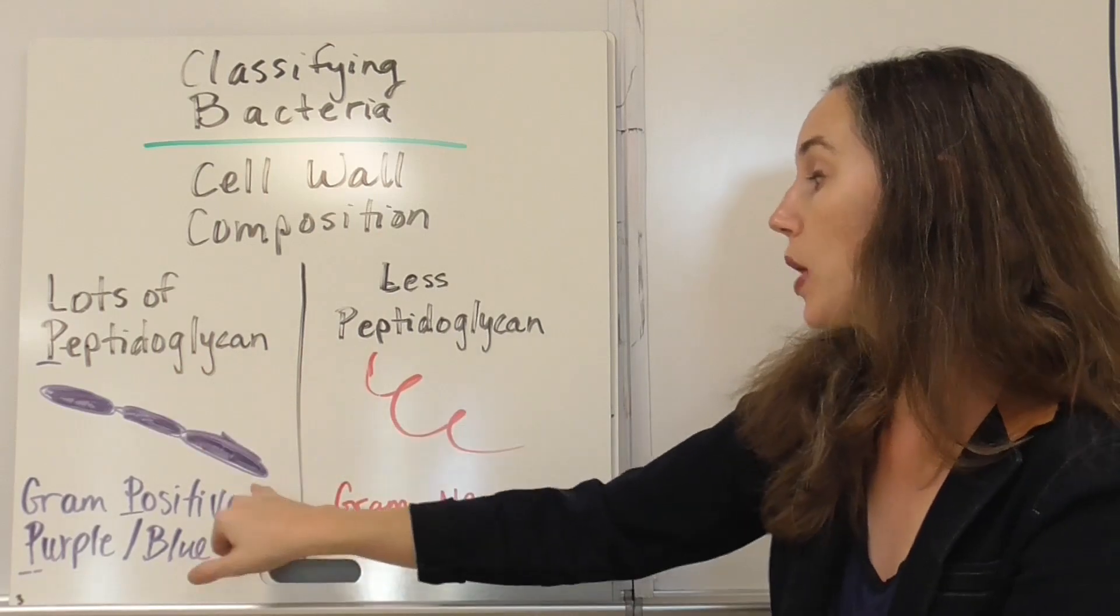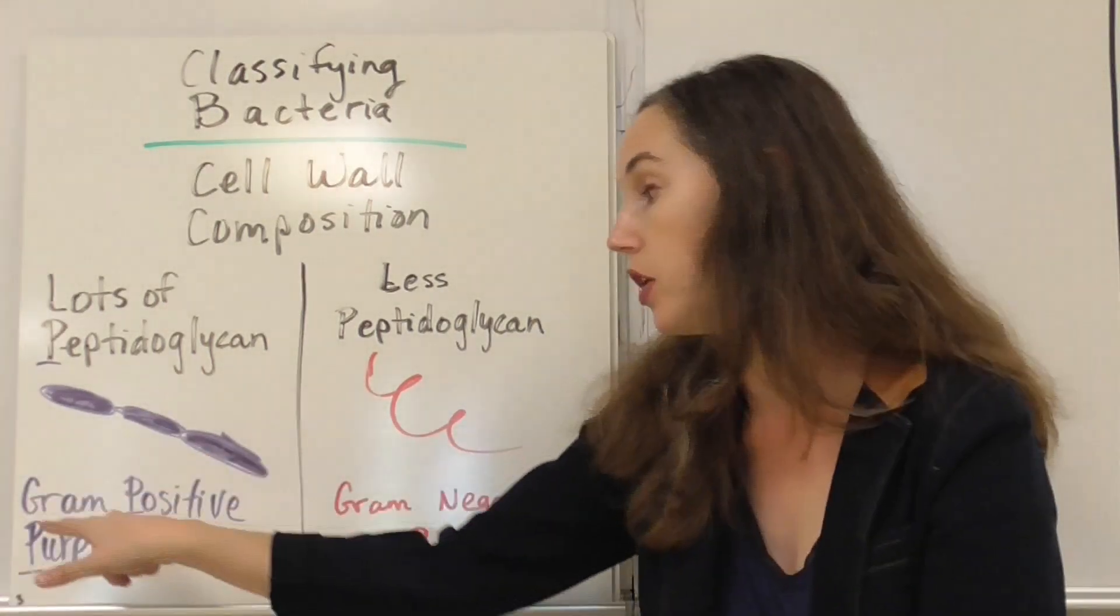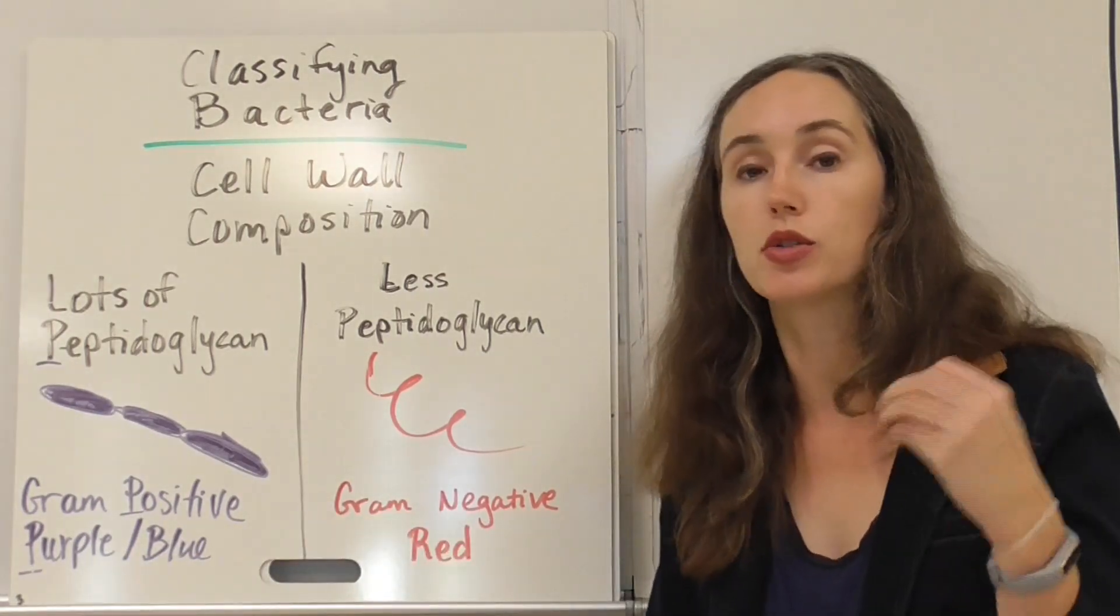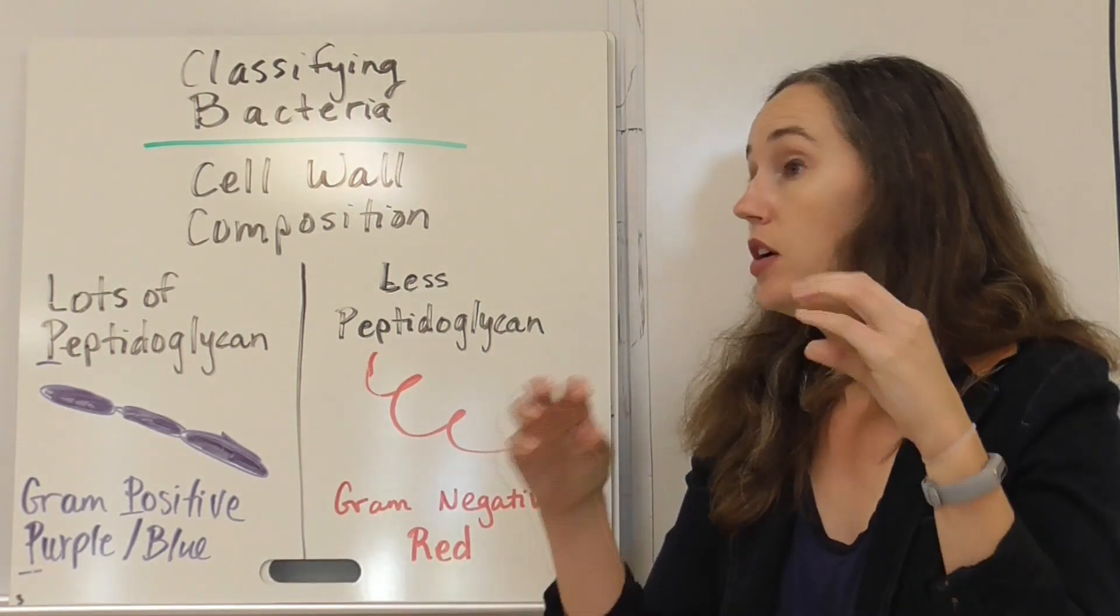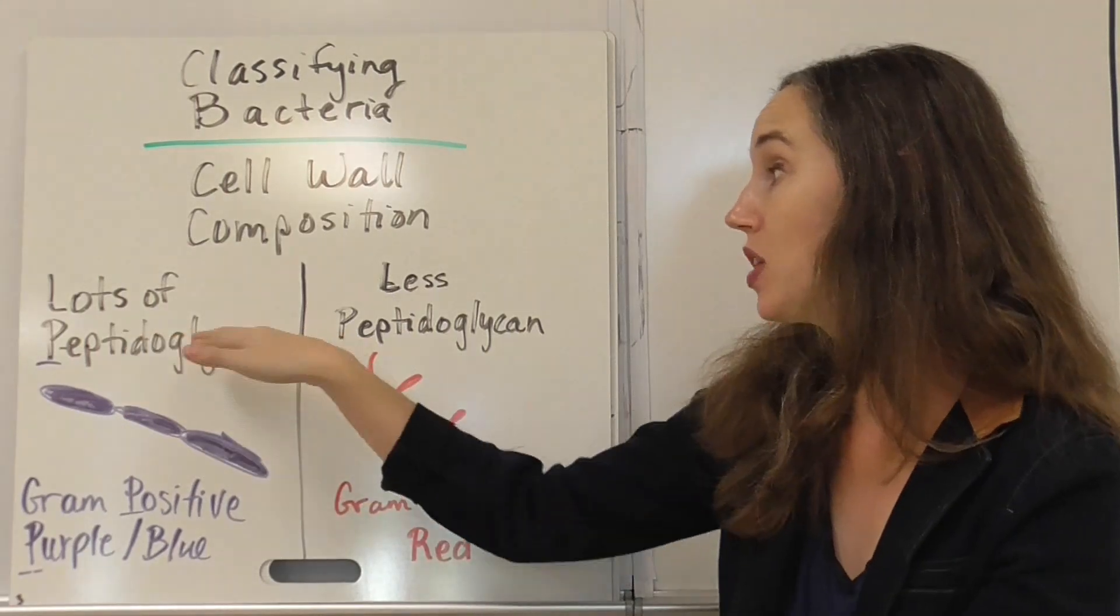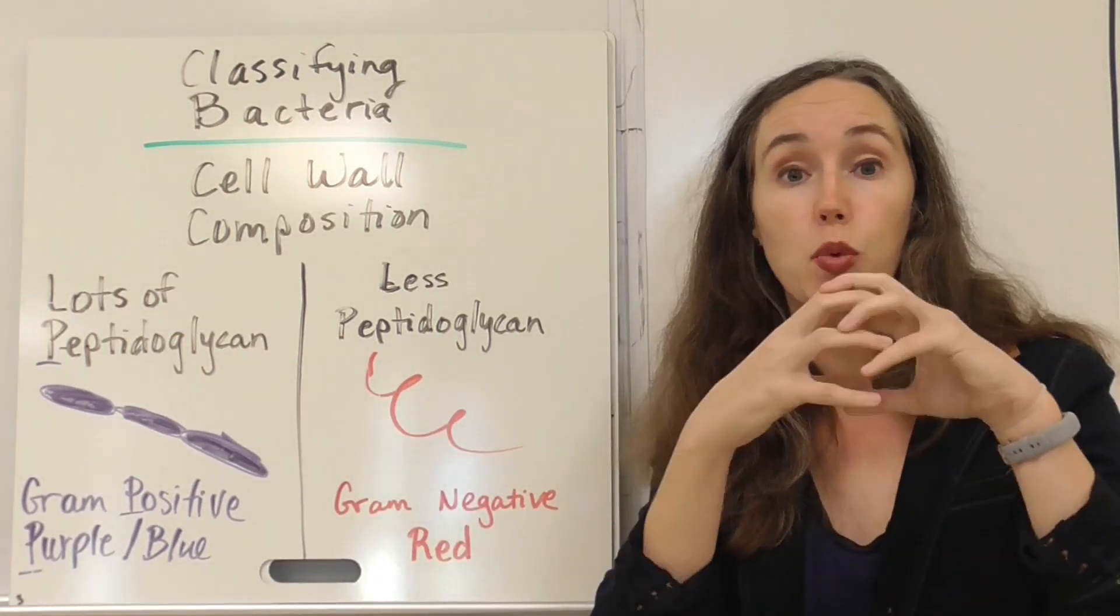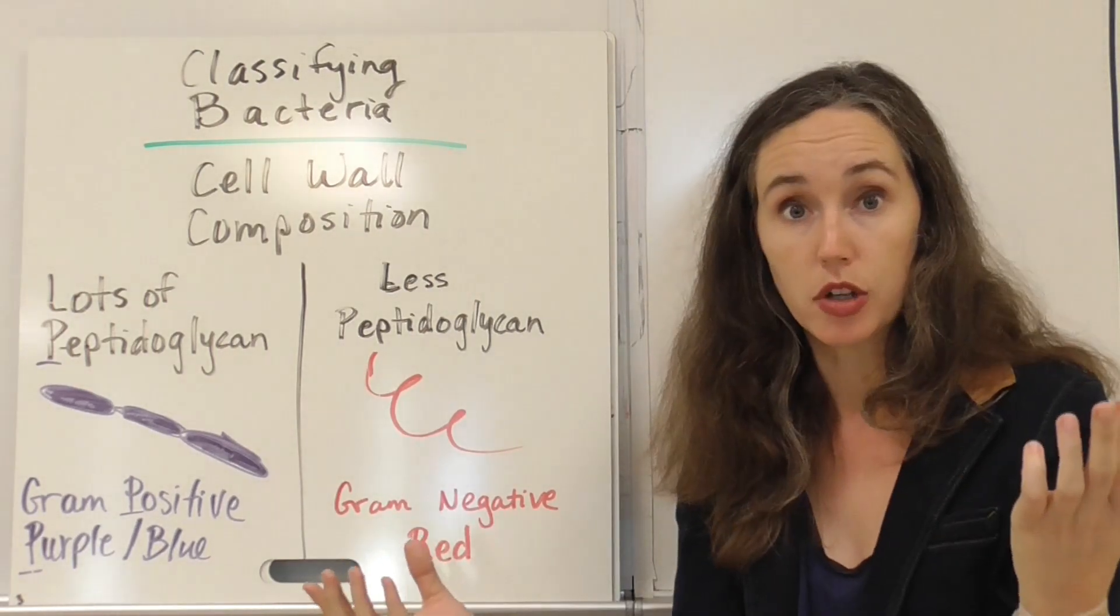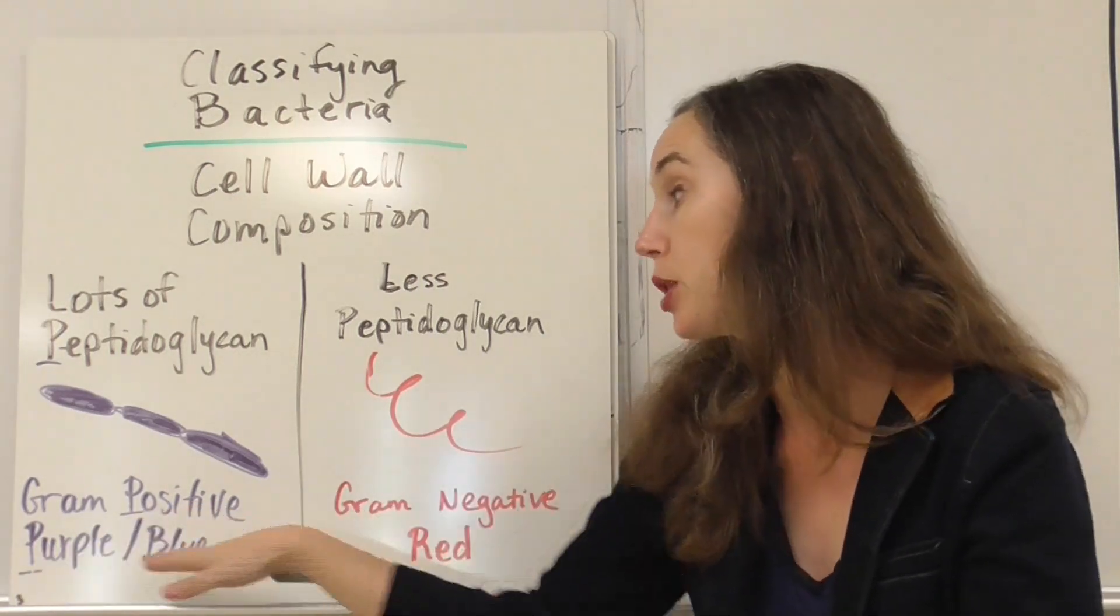And that's because there is a test called the gram stain test. And it takes a molecule called crystal violet, violet like purple. And if it is a bacteria with lots of peptidoglycan, those purple molecules are going to get stuck in between the web of the peptidoglycan. And so when you look at it into a microscope, it's going to stain and you're going to be able to see it as purple or like bluish.